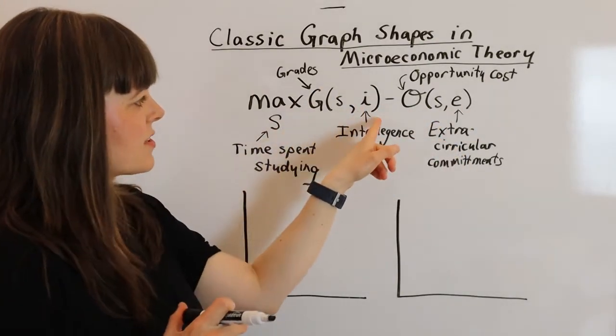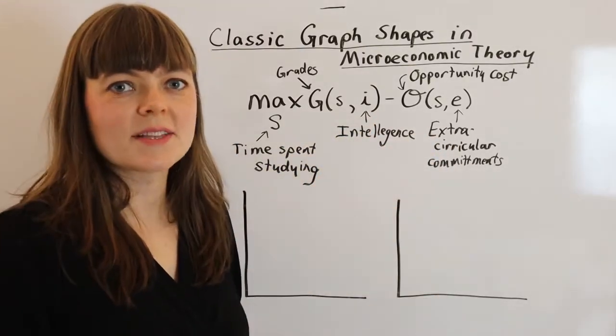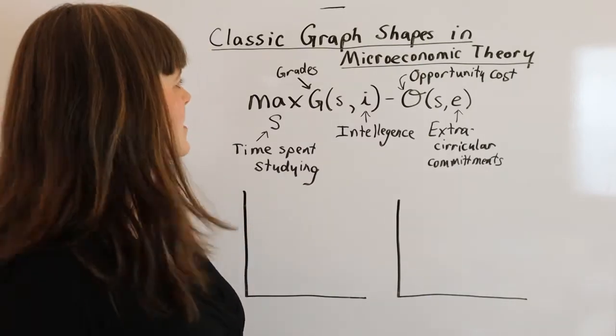And we've got two exogenous variables, intelligence and extracurricular commitments, which could include jobs outside of the classroom, it could include sports, things like that.